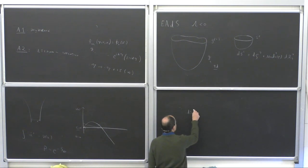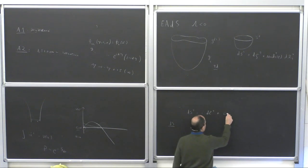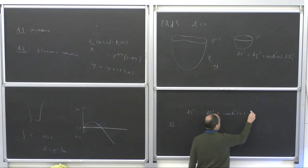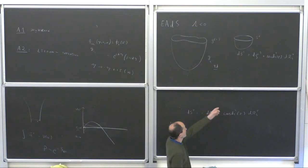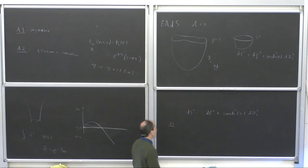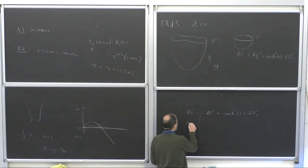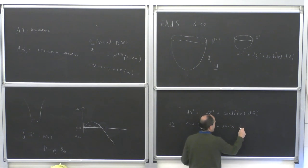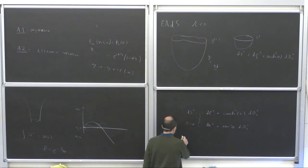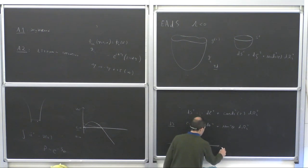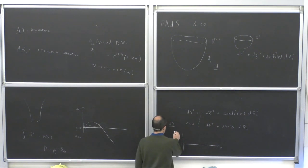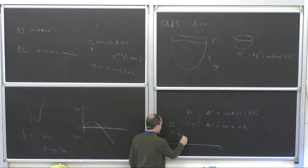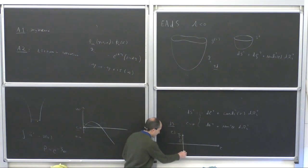Let's start with de Sitter space. The de Sitter metric is: ds^2 = -d_tau^2 + cosh^2(tau) d_Omega_3^2. The Euclidean metric is obtained by tau equal to i*theta, giving: d_theta^2 + sin^2(theta) d_Omega_3^2. In the complex time plane: at t equal to zero, we go into the Euclidean direction all the way to pi/2, and that segment describes half of S^4 — the full S^4 being described by the whole segment from 0 to pi/2.